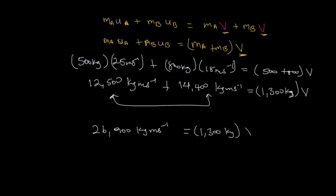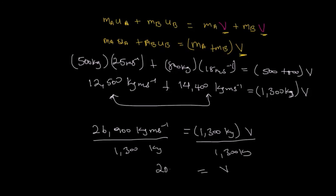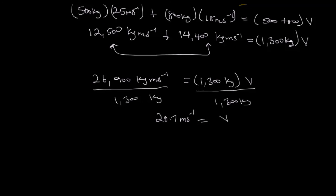To find v, we simply divide both sides by 1,300 kilograms. This gives us a velocity of 20.7 meters per second. Now we need to determine the direction.